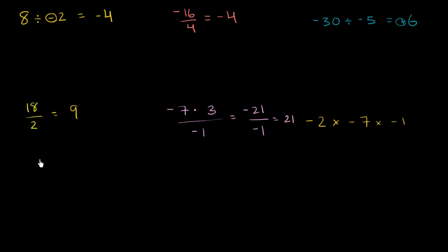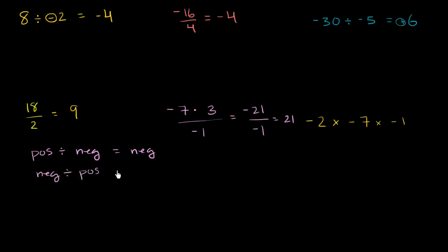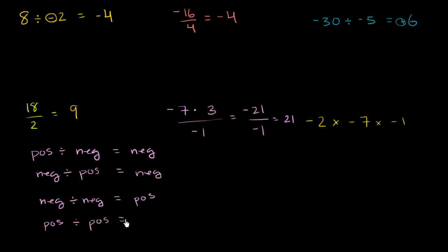Let me write all these things down. If I have a positive divided by a negative, that's going to give me a negative. If I have a negative divided by a positive, that's also going to give me a negative. If I have a negative divided by a negative, that's going to give me a positive. And if I have a positive divided by a positive, that's also going to give me a positive.